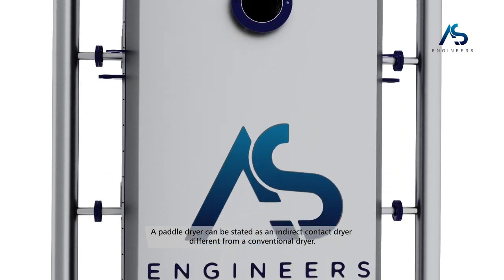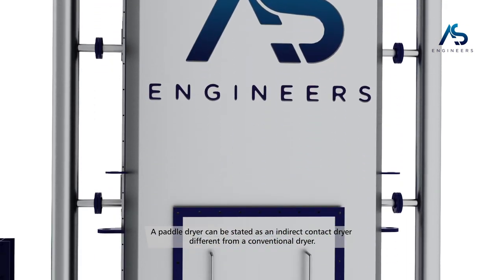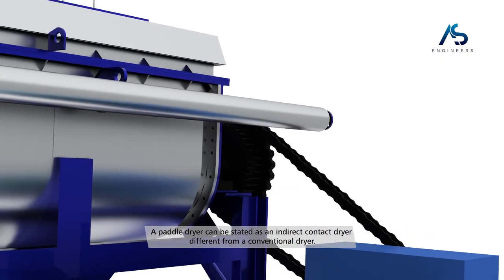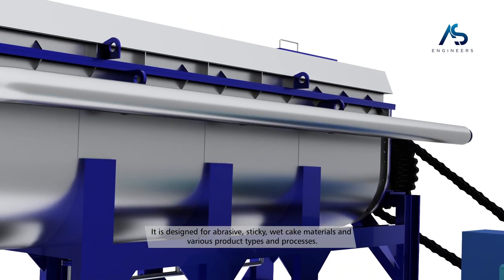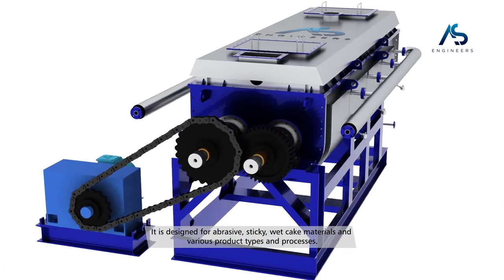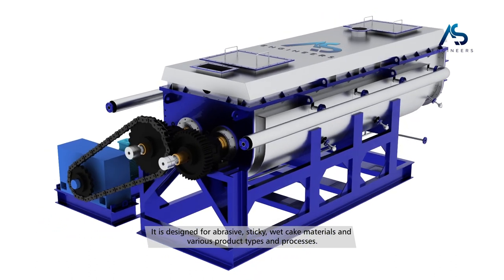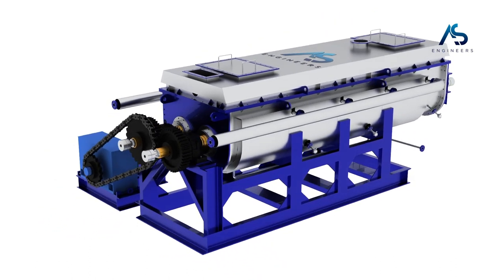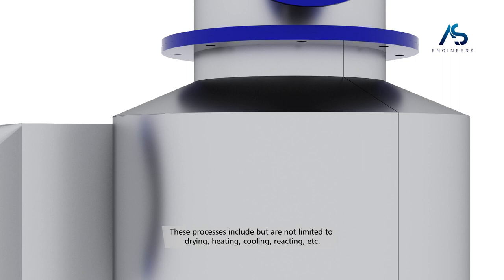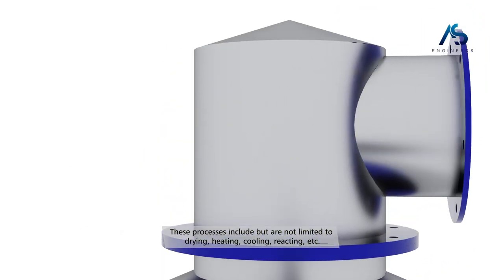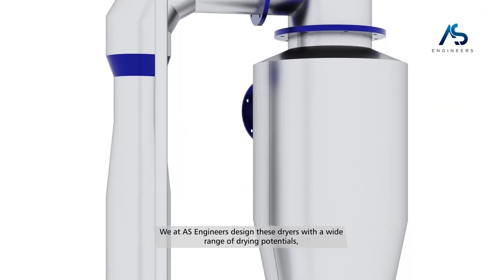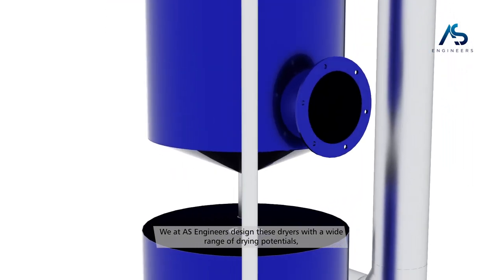A paddle dryer can be stated as an indirect contact dryer. Different from a conventional dryer, it is designed for abrasive, sticky, wet cake materials and various product types and processes. These processes include but are not limited to drying, heating, cooling, reacting, etc. We at AS Engineers design these dryers